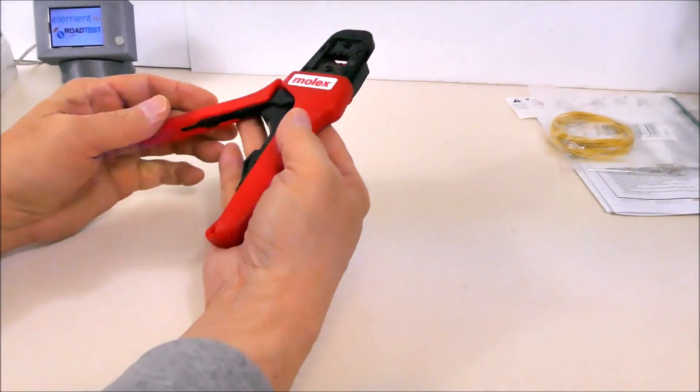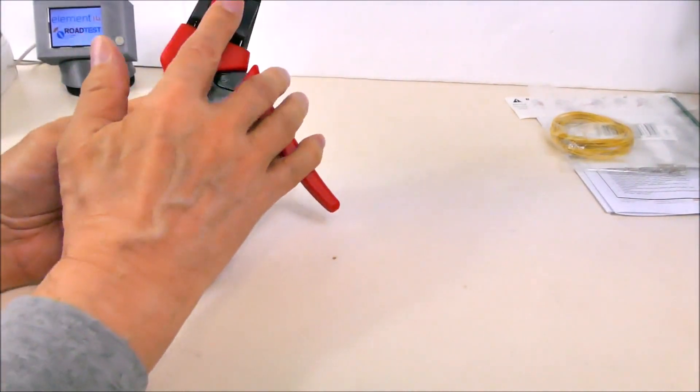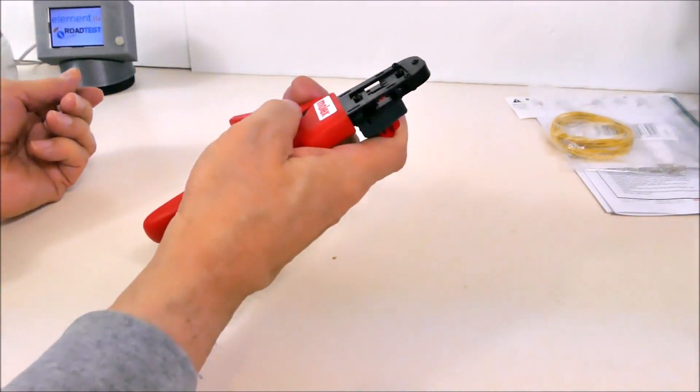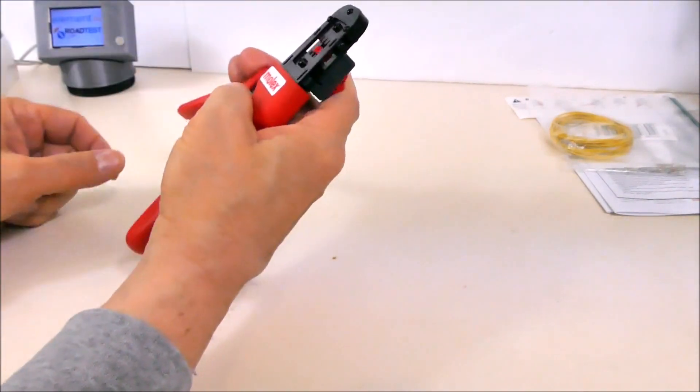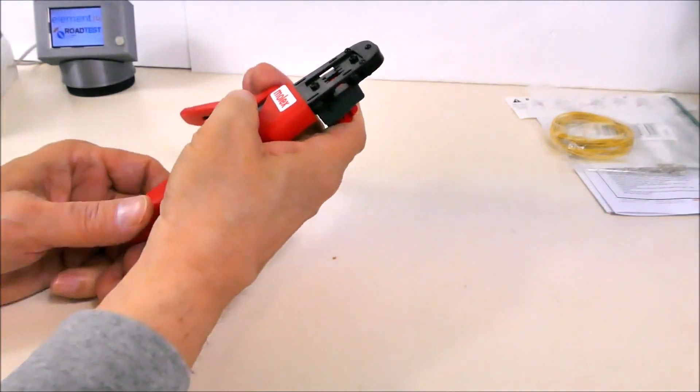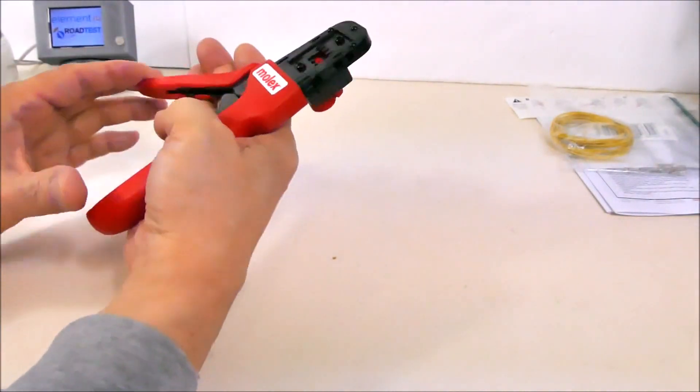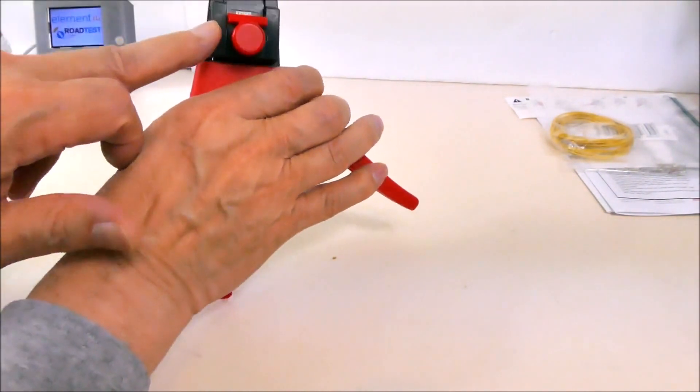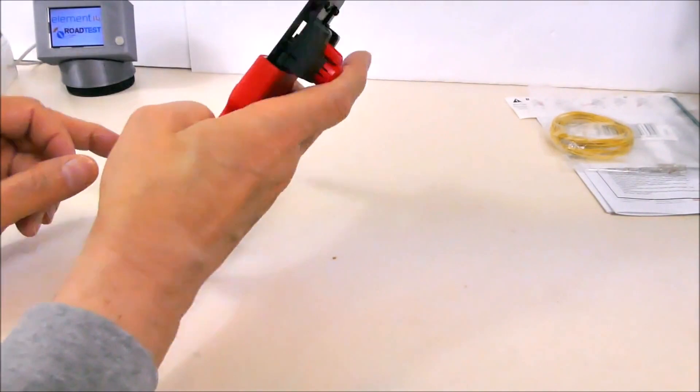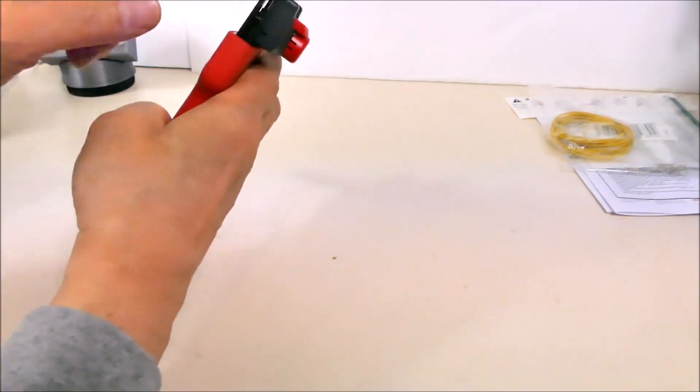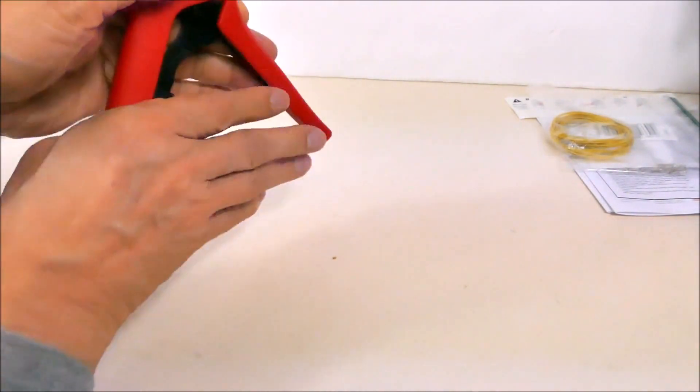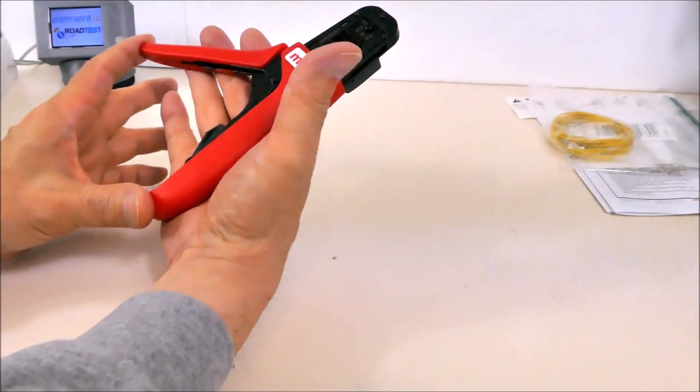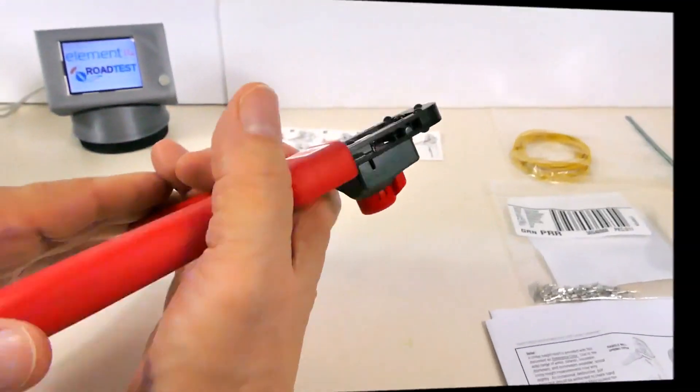One thing I forgot to mention is that this mechanism on the back, which allows you to operate the locator apparatus single-handedly, can be switched for left-handed people. You could reverse both the jaws and the locator spring assembly so that you could operate this with your left hand. That's pretty useful for left-handed people.